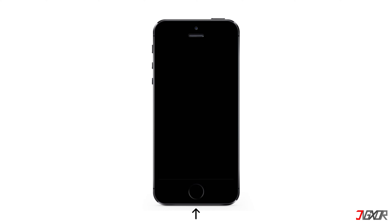With iPhone 6s or earlier models, including iPhone SE 1st generation, press and hold both the home and top or side buttons at the same time. Keep holding them until the recovery mode screen is displayed.